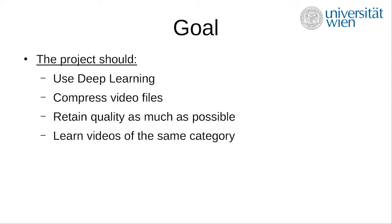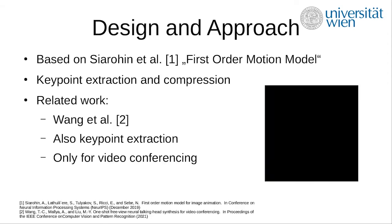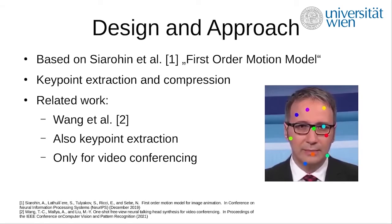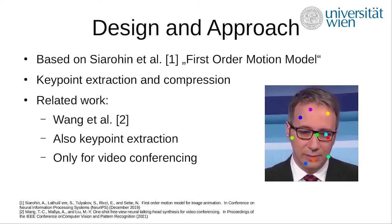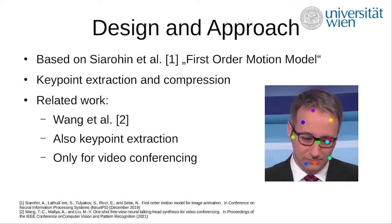In our research we discovered a project from Siarohin et al. called First Order Motion Model. By training a neural network on a video, this project is capable of transferring motion to an image within a video category — for example, videos of human faces or tai chi movements.